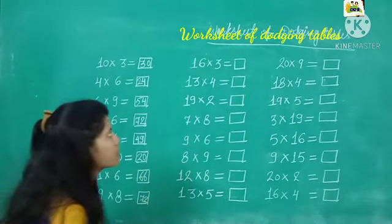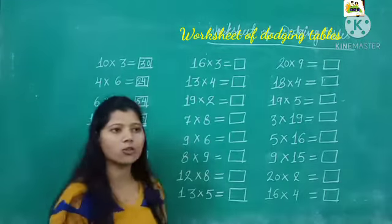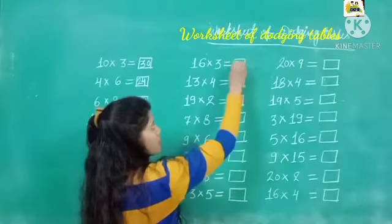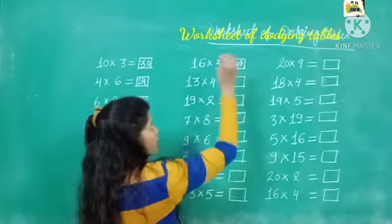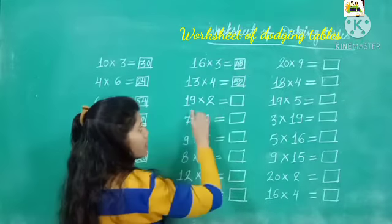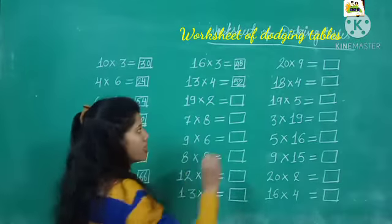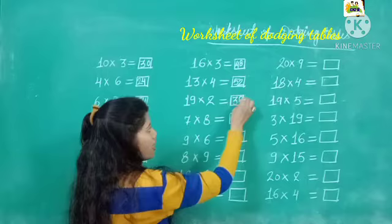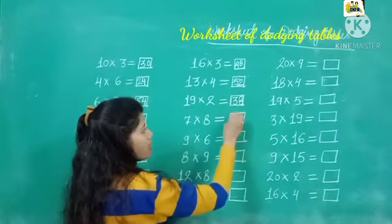Next aap ko given hai 16 threes are. 16 threes are, 16 ko 3 se karenge to kya hoga? 48. 13 fours are 52. 19 twos are 38. 7 eights are. 56.